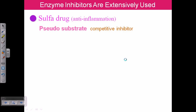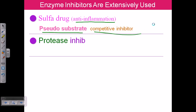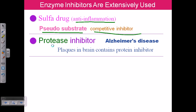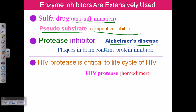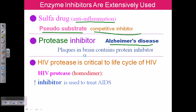Enzyme inhibitors are extensively used. A sulfur drug can be used as an anti-inflammatory agent, acting as a pseudo-substrate or competitive inhibitor. For Alzheimer's disease, a protease inhibitor can be used because protease enzymes in Alzheimer's disease produce plaques in the brain. Using a protease inhibitor can inhibit the protease enzyme, blocking plaque formation and thus helping to address Alzheimer's disease.